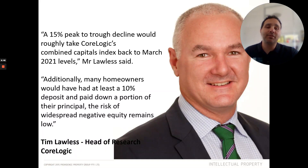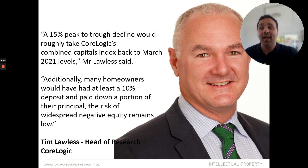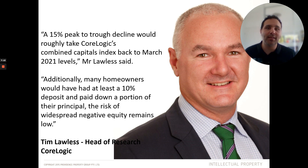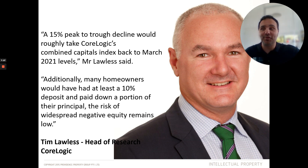According to CoreLogic's head of research Tim Lawless, a 15% peak-to-trough decline would roughly take CoreLogic's combined capital index back to March 2021 levels. Additionally, many homeowners would have had at least a 10% deposit and paid down a portion of their principal, so the risk of widespread negative equity remains low. What he's saying is that even if we get a 15% drop, property prices will still be as expensive as they were 18 months ago.